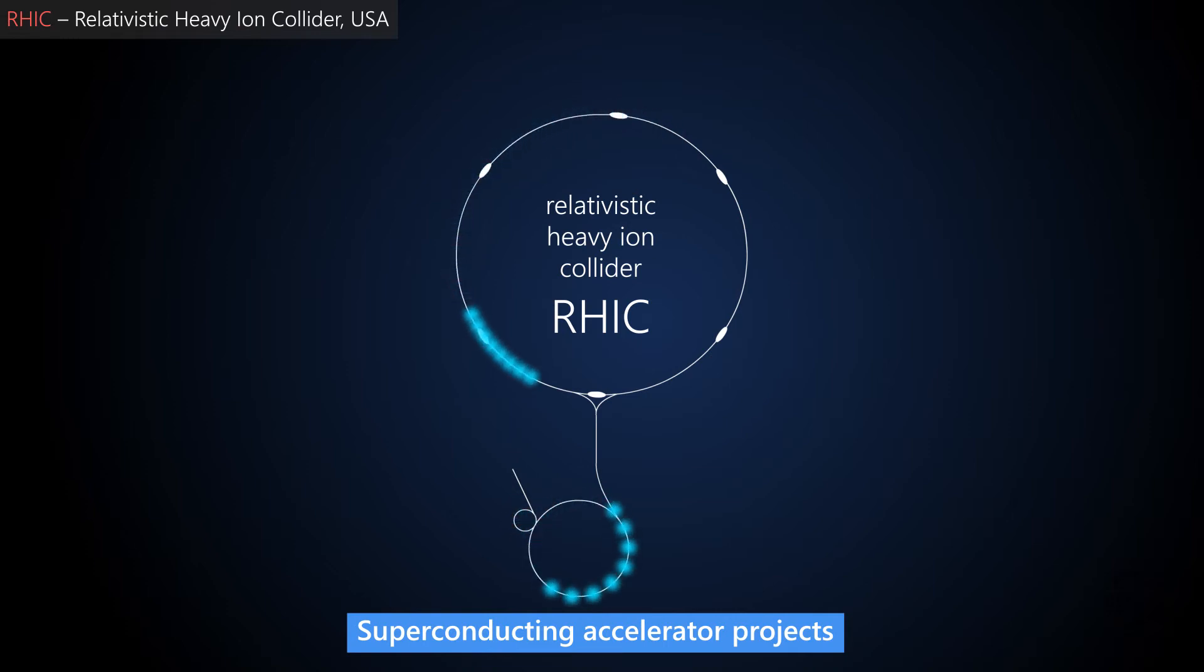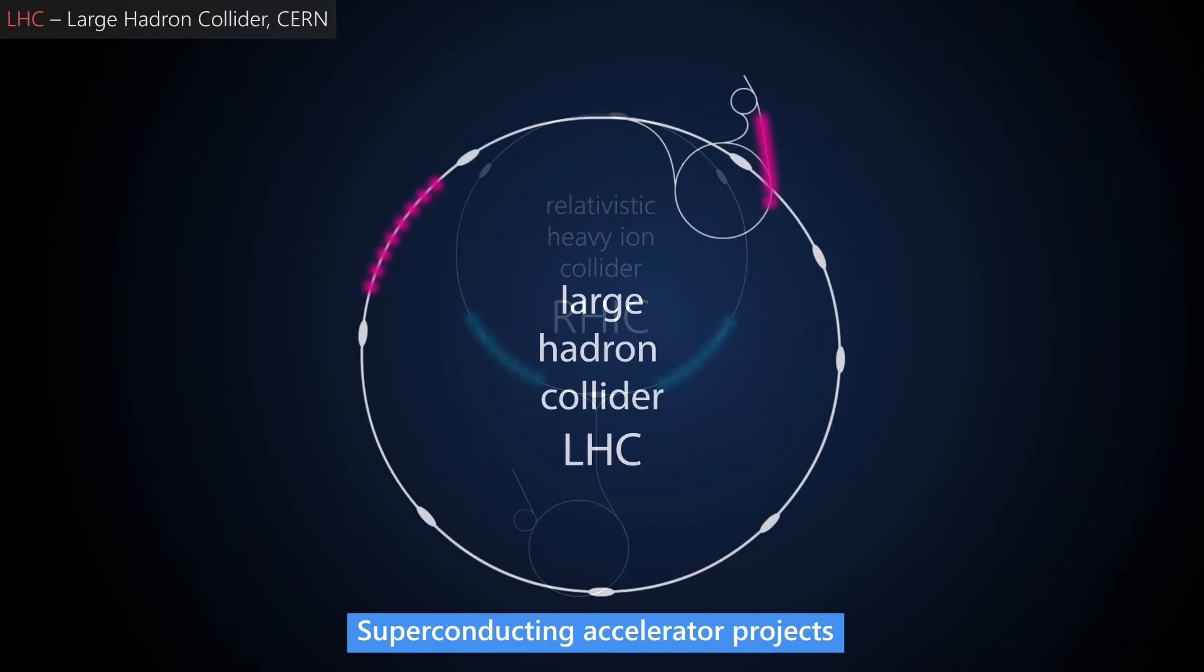In the 90s, a project on a heavy ion collider with a superconducting magnetic system was implemented at the Brookhaven National Laboratory in the US. This accelerator was called RHIC, which stands for Relativistic Heavy Ion Collider.